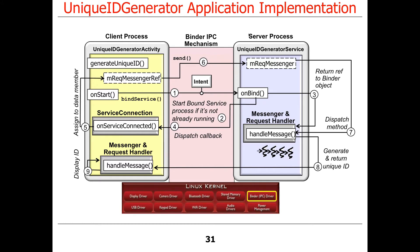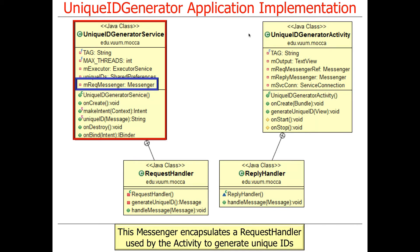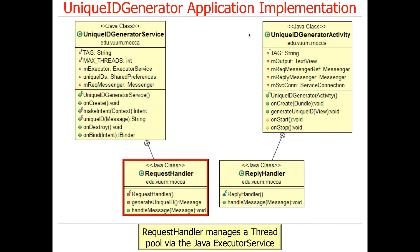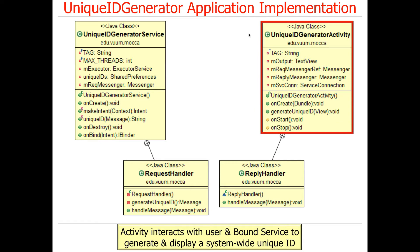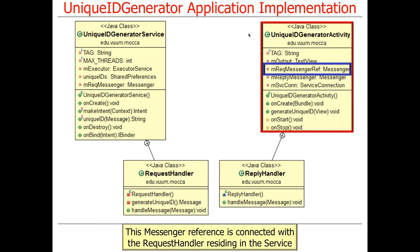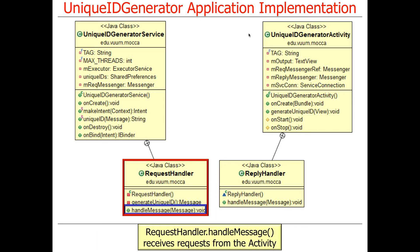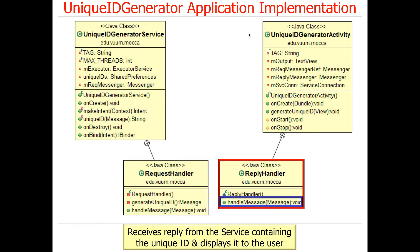Here is the implementation. There's the GeneratorService, which provides the service — it has a request messenger, a reference to which is sent back to the client activity, and a request handler that processes things in a thread pool. The activity has a reply messenger it passes to the service when requesting an ID, a reference to the request messenger to make method calls via this proxy, and a reply handler that displays results. What's interesting is just the symmetry between the service and the activity through all these different steps.